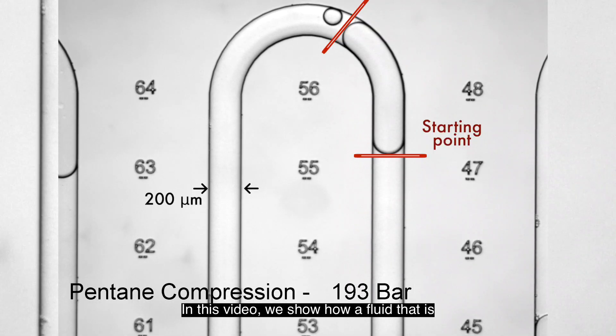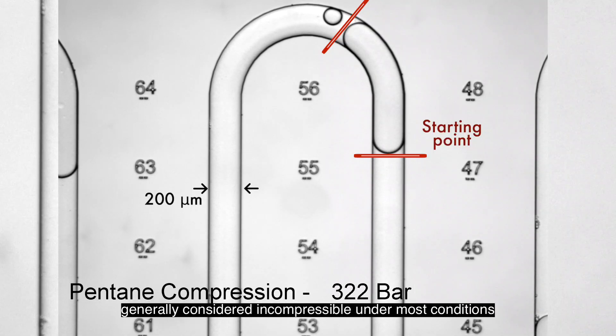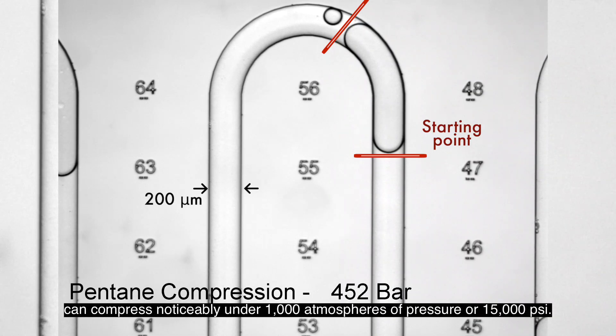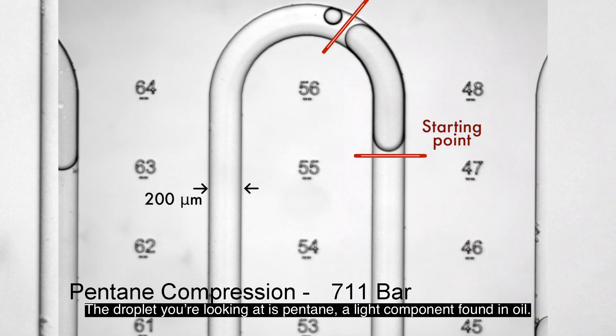In this video, we show how a fluid that is generally considered incompressible under most conditions can compress noticeably under 1,000 atmospheres of pressure, or 15,000 PSI. The droplet you are looking at is pentane, a light component found in oil.